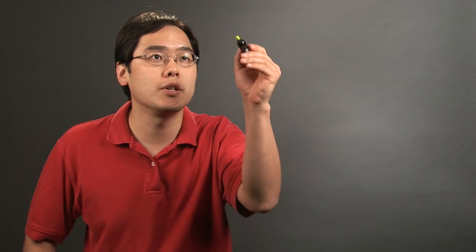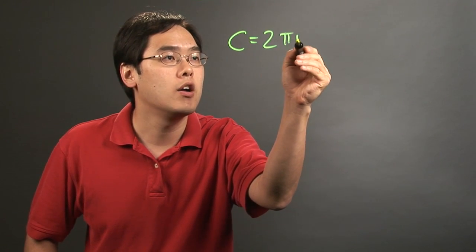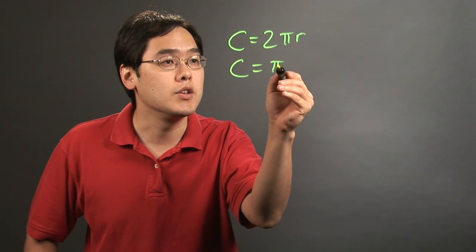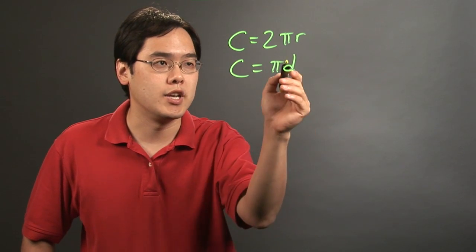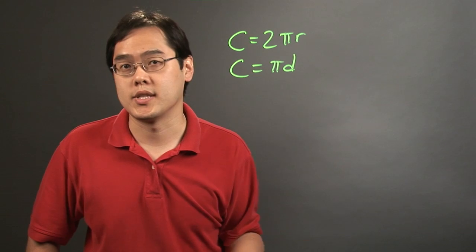In terms of finding the circumference of a balloon, you simply use this formula: C equals 2πr, where r is the radius of the balloon, or you can use C equals πd, where d is the diameter of the balloon. As you know, d equals 2 times the radius, so that's why you can make that substitution.